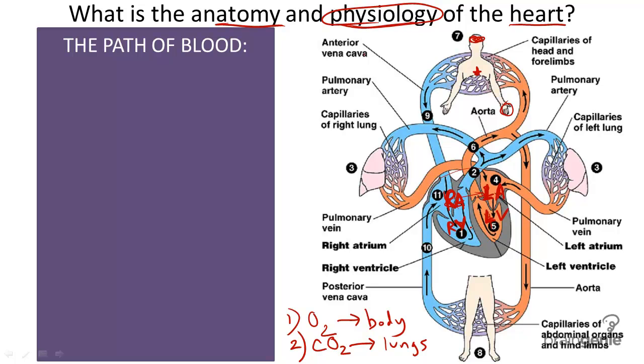So, right atrium, right ventricle, left atrium, left ventricle. This will be important to remember. So, let's trace the path of blood through the heart, and to all parts of the body.